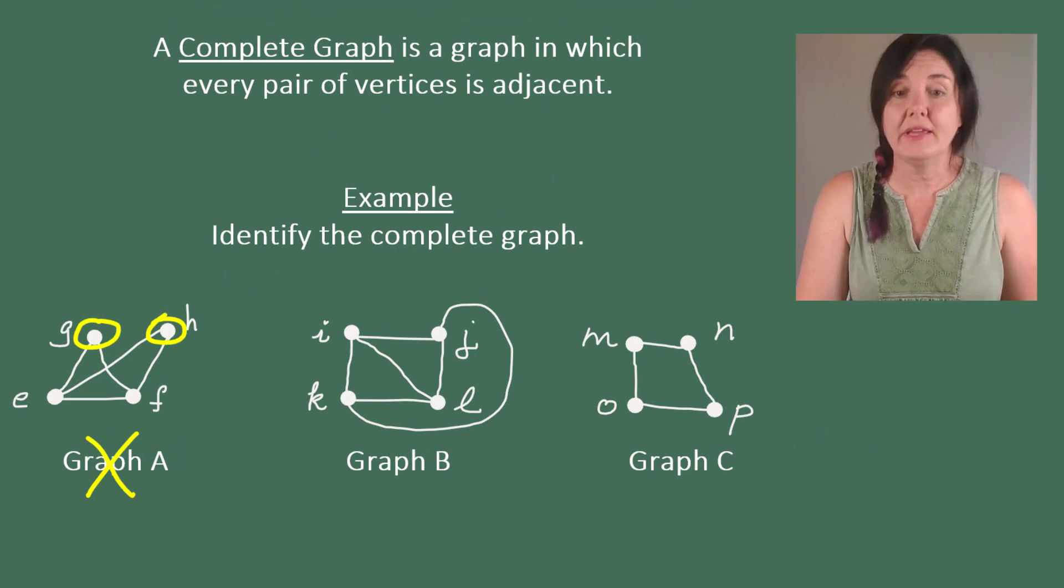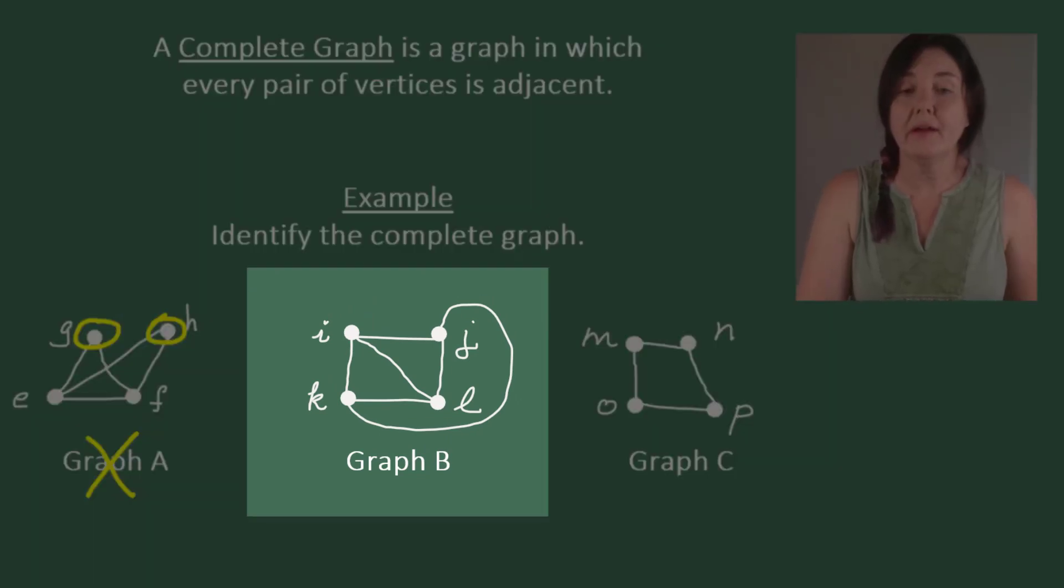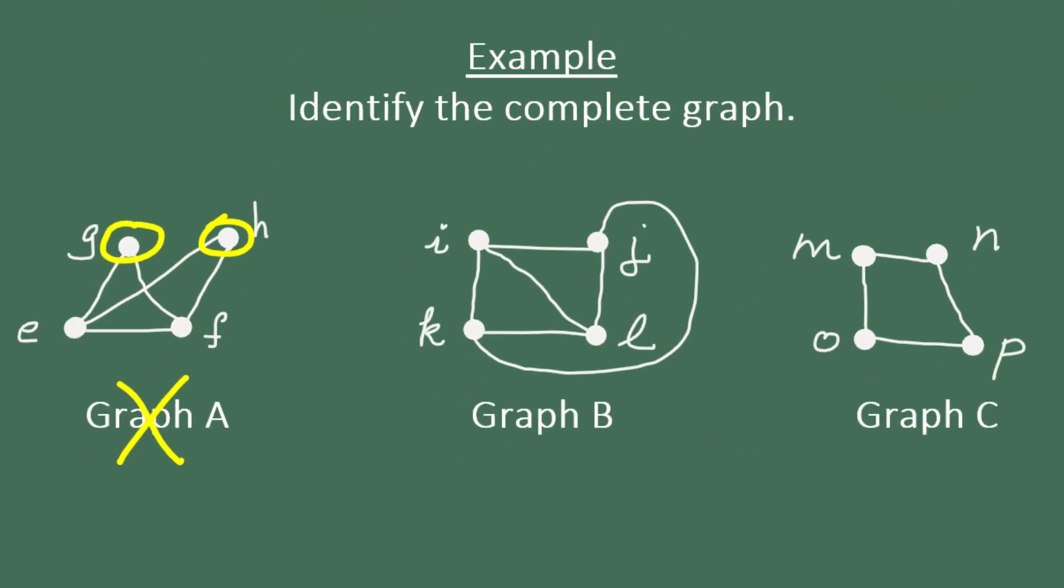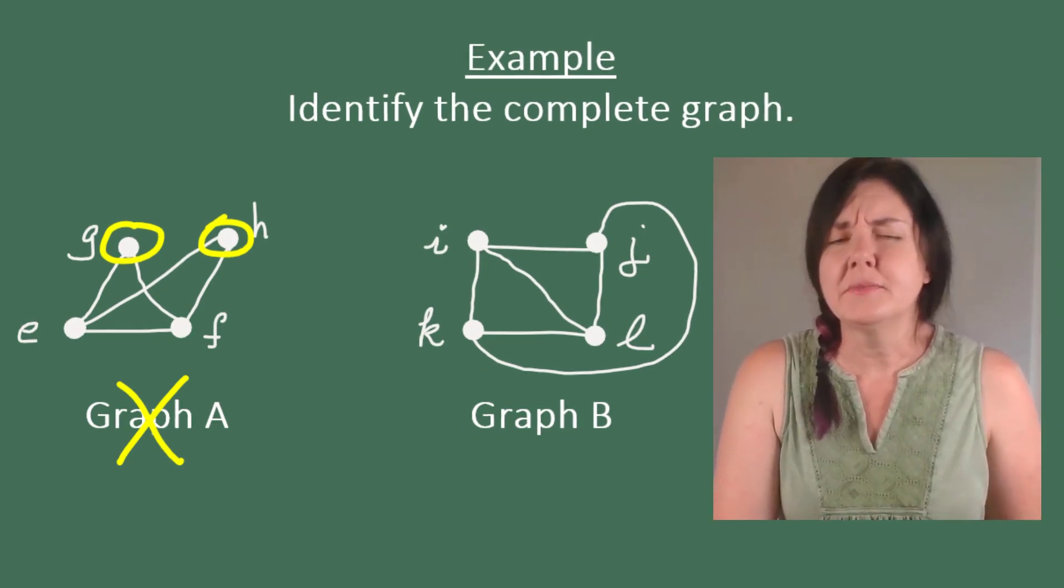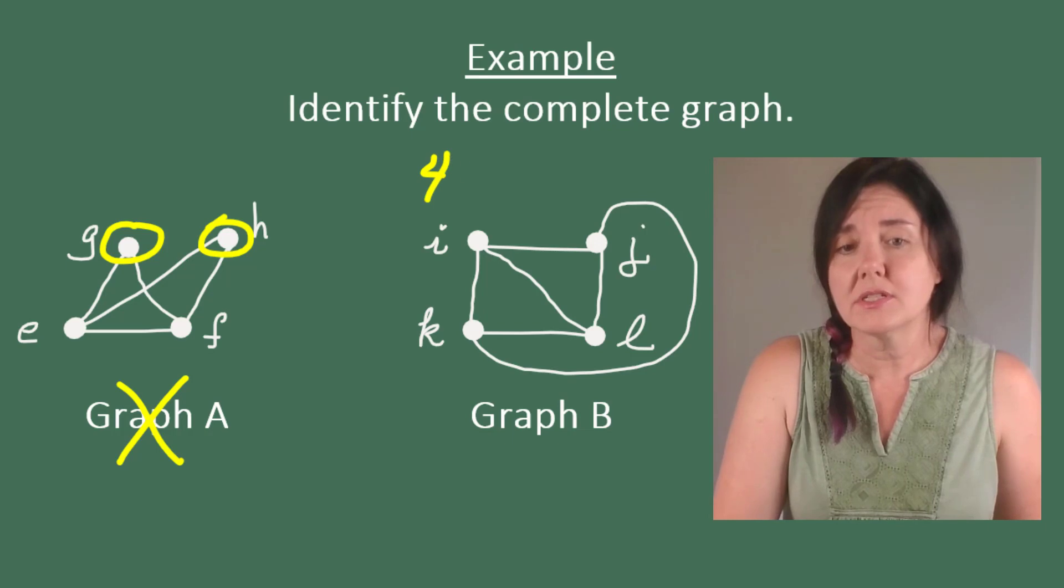Now let's look at graph B. We could go pair by pair and look through the vertices I, J, K, and L to see if each of the vertices is joined to each of the other vertices. That would be one way to approach the problem.